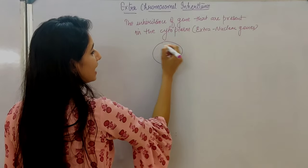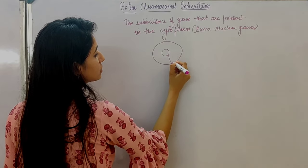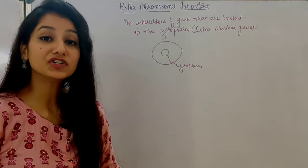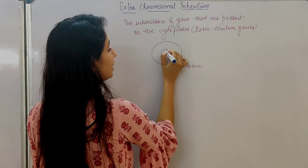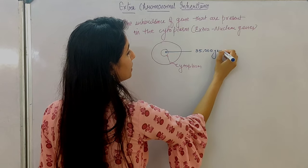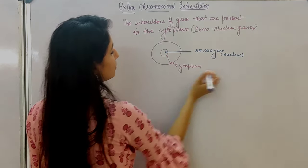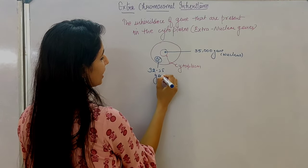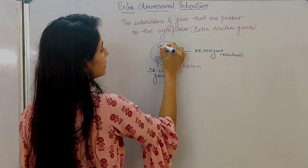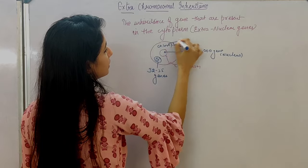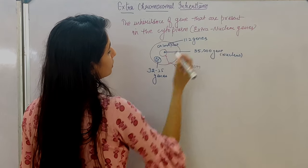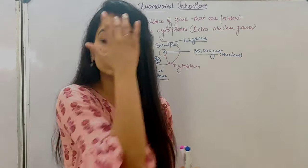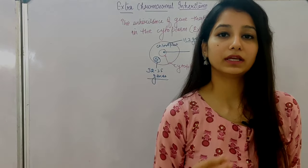I hope you know about this cell — this is the nucleus and this region is known as cytoplasm. The nuclear region contains 35,000 genes. While in the cytoplasm, the mitochondria contains nearly about 32 to 35 genes, and the chloroplast contains nearly about 112 genes. So there is a huge ratio difference between the nuclear genes and the cytoplasmic genes, but we have to study cytoplasmic inheritance.